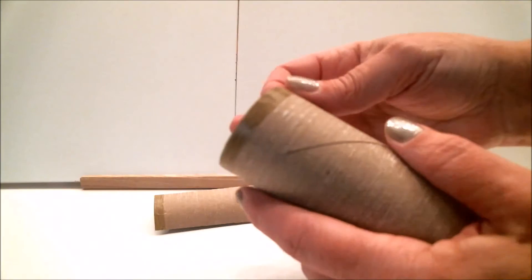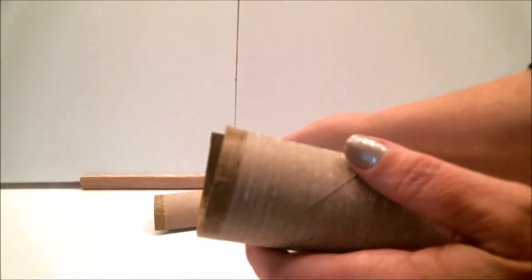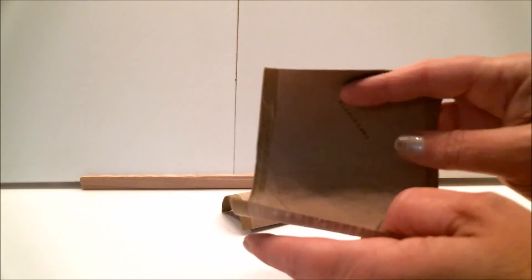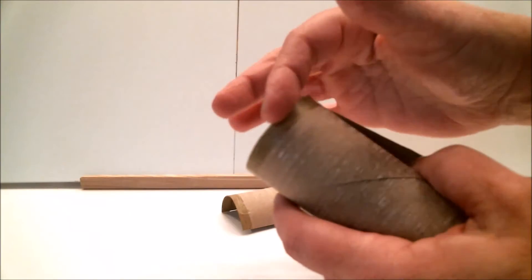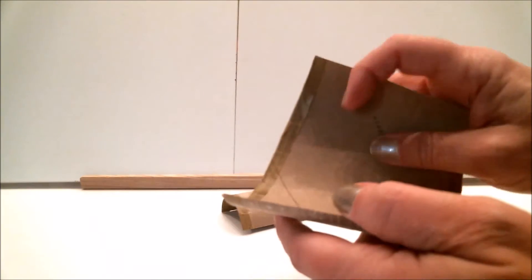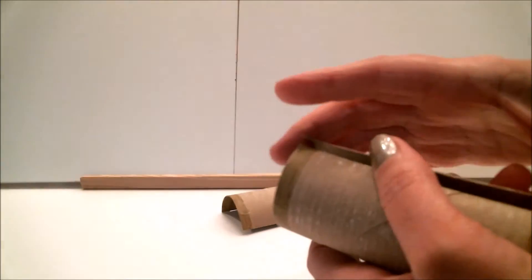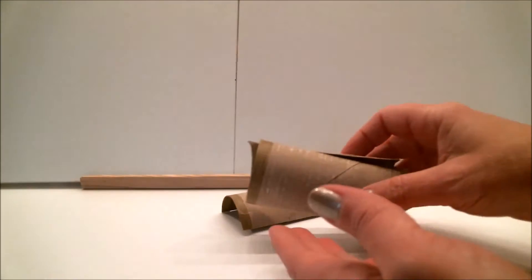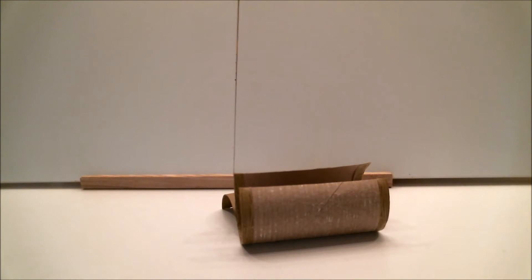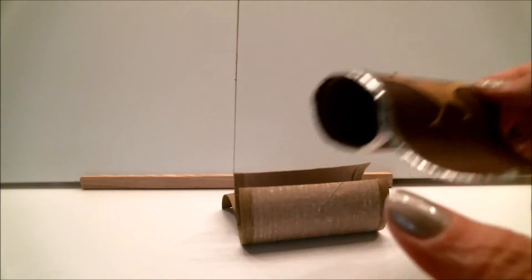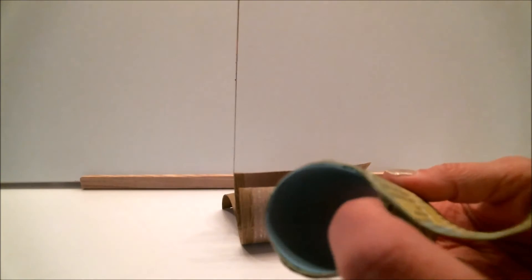Now that we have the washi tape around all of the edges, it's time to put something on the inside. Now if you chose to paint the edges, then you might have chose to paint the inside. But I am using the washi tape. And on the faux leather one, I chose to put faux leather on the inside as well. And on the paper one, I chose to put paper on the inside.